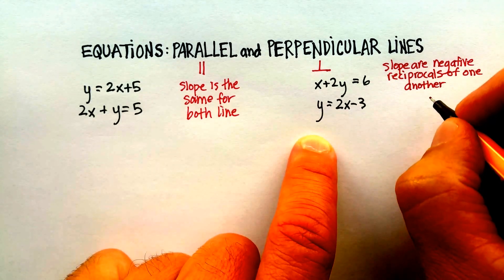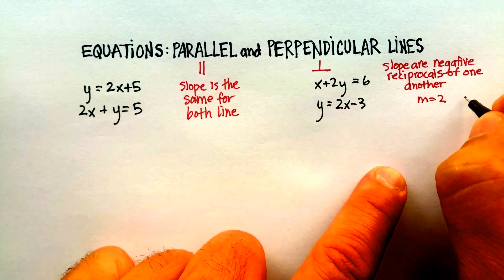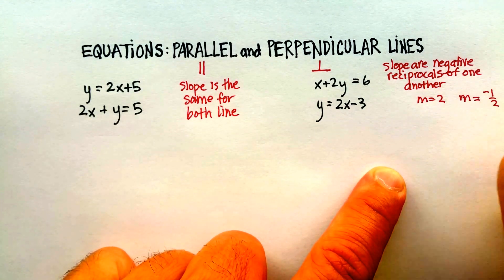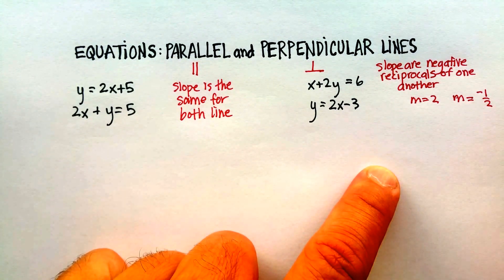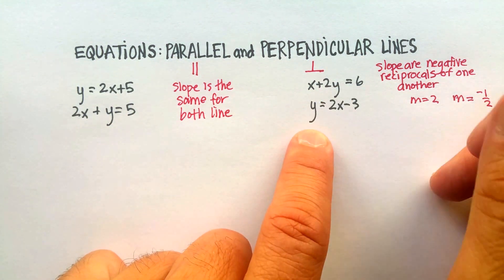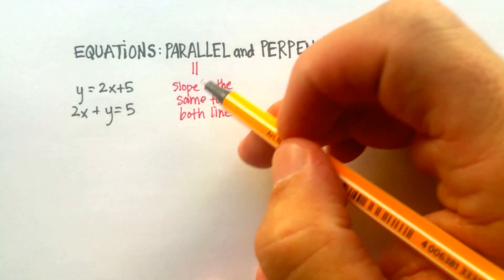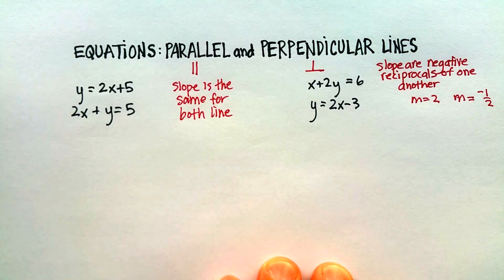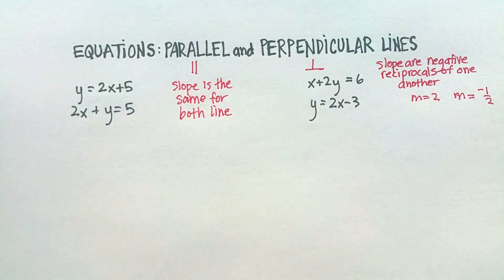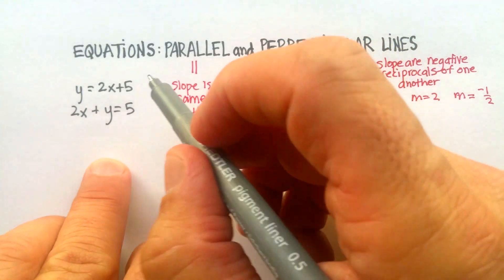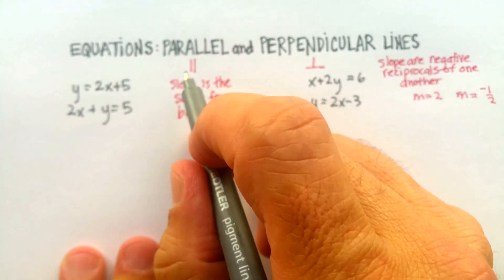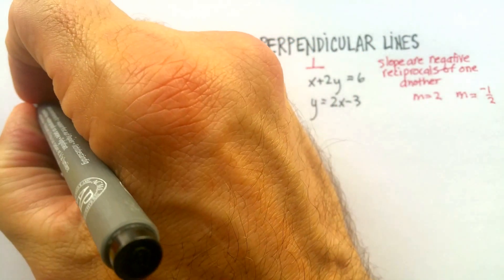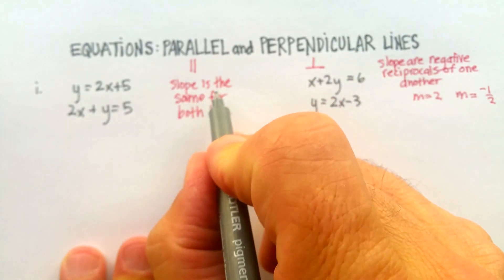So for example, if the slope of one line is 2, the negative reciprocal would be negative one over two. And that's how you can tell whether these two lines would be perpendicular to one another. If they don't fit either one of these, these lines are just crossing at one point. So with that in mind, let's go ahead and just check these four examples out. So the question is, are these two lines parallel, perpendicular, or do they simply just intersect?